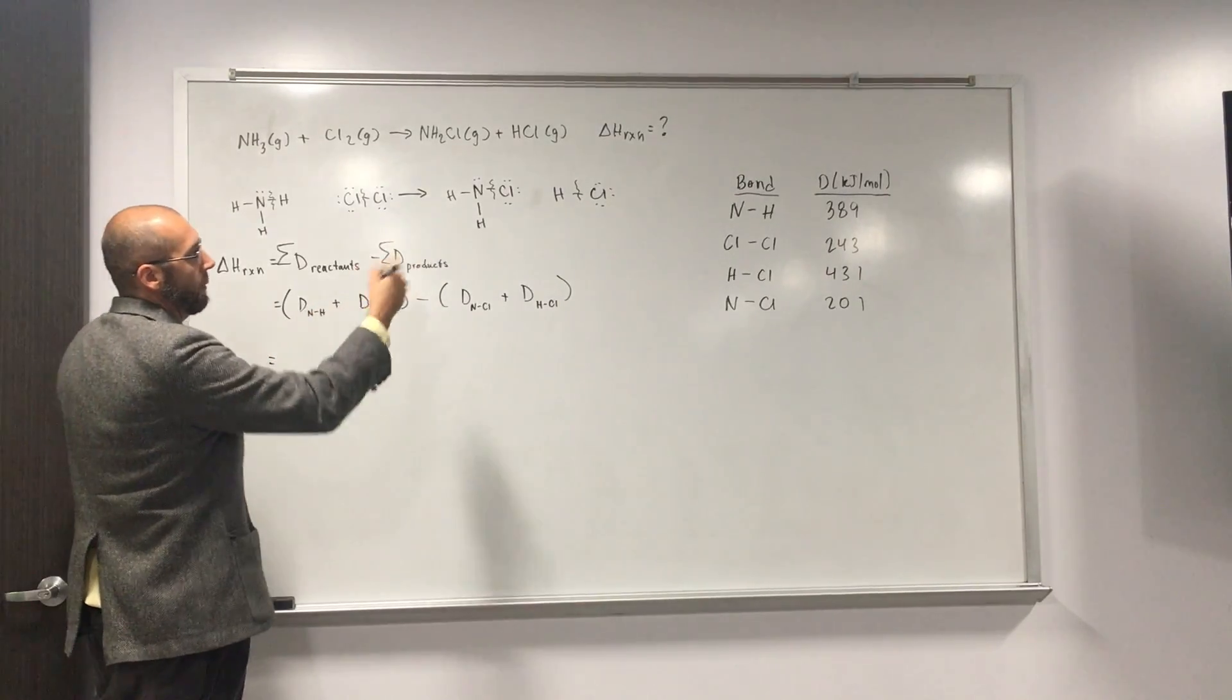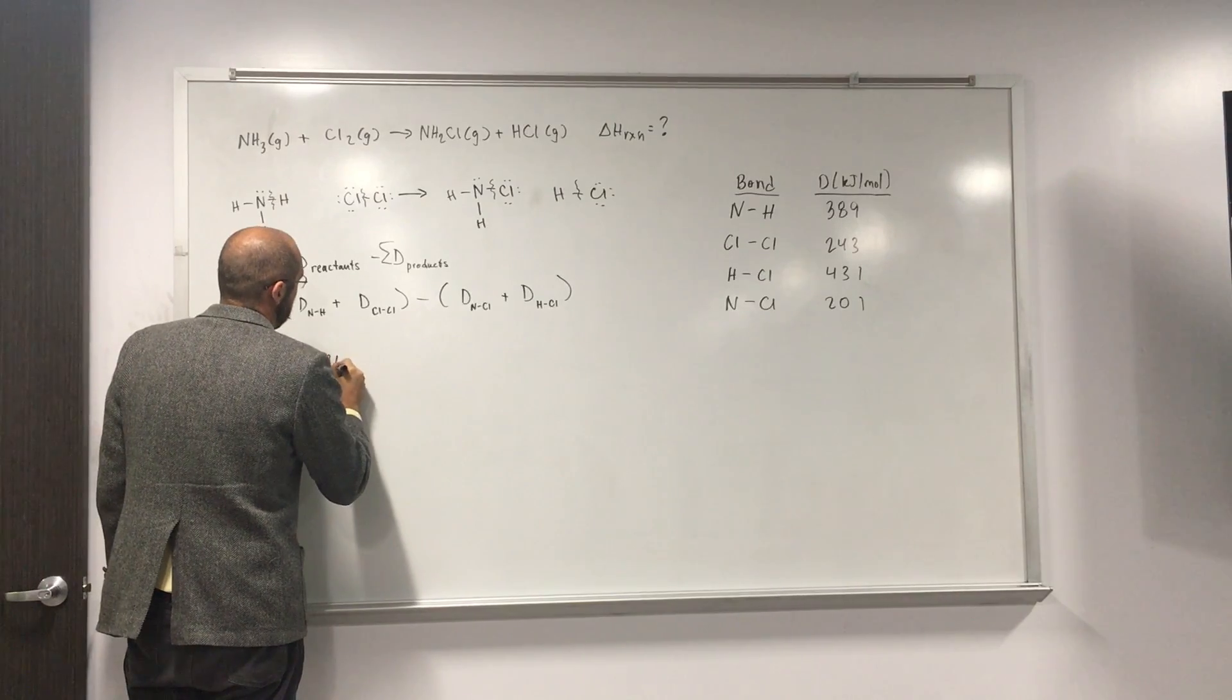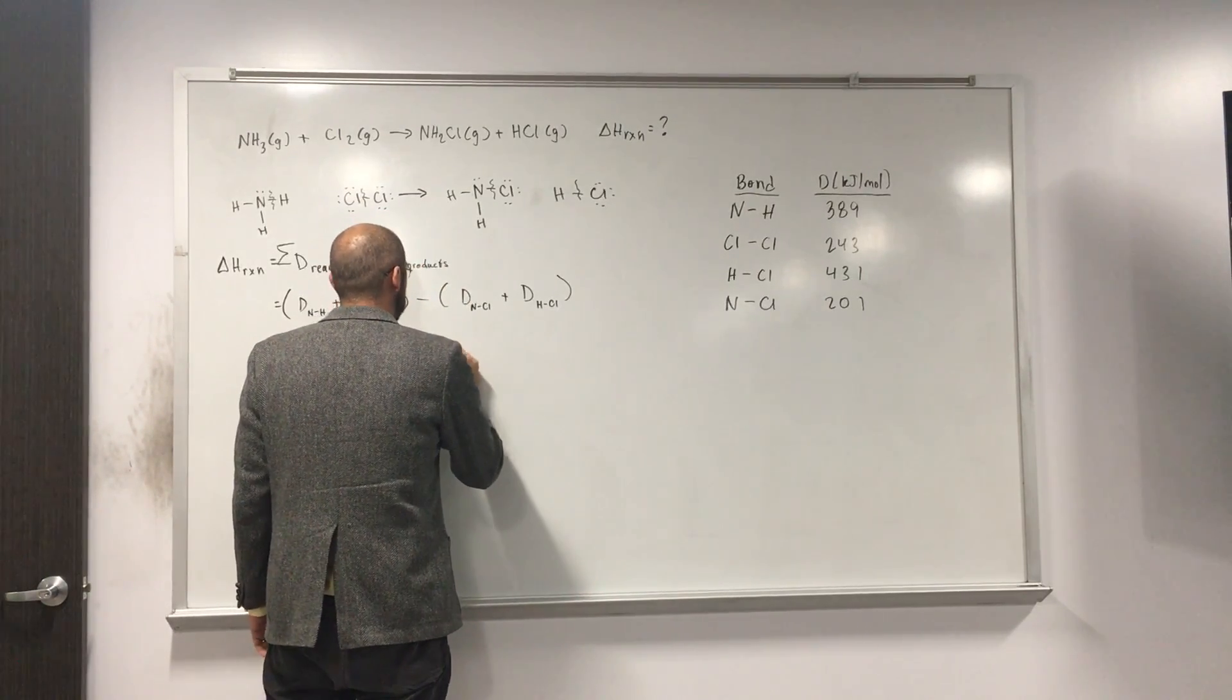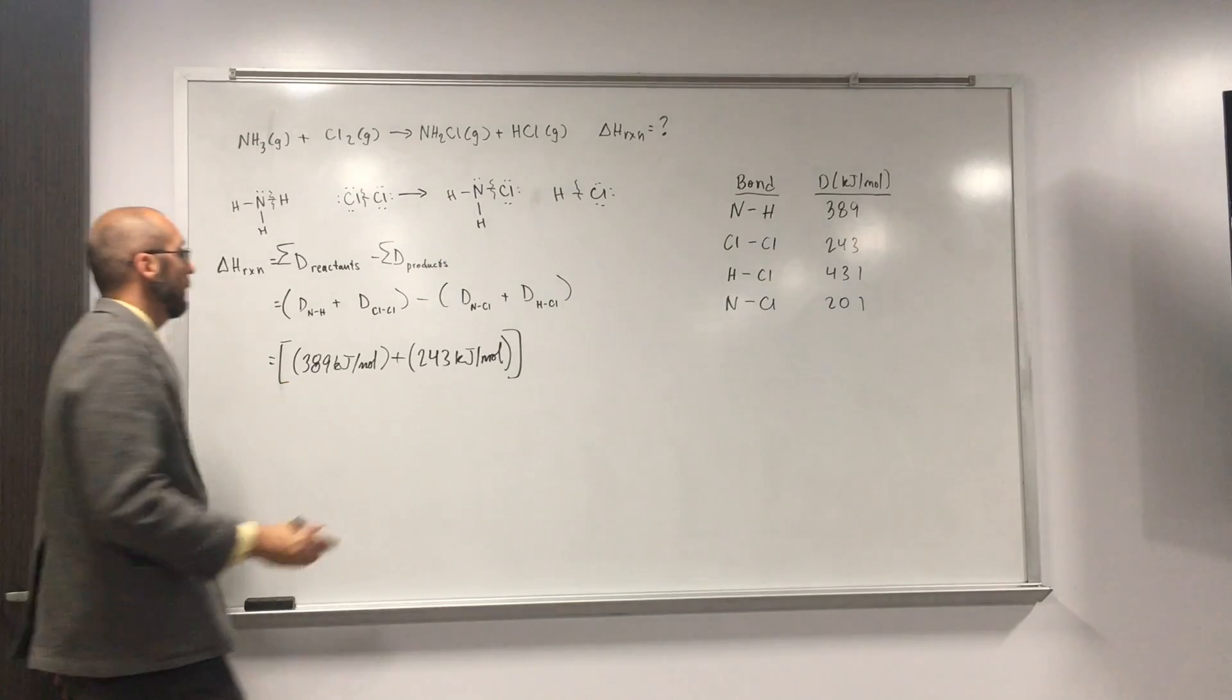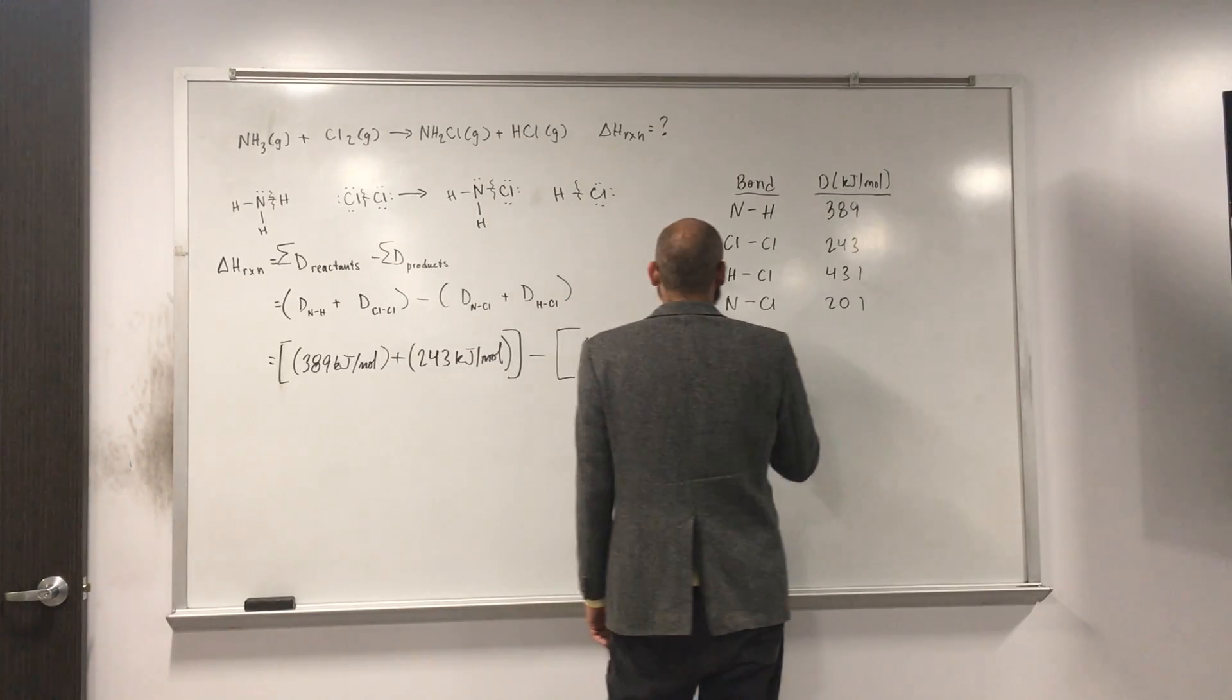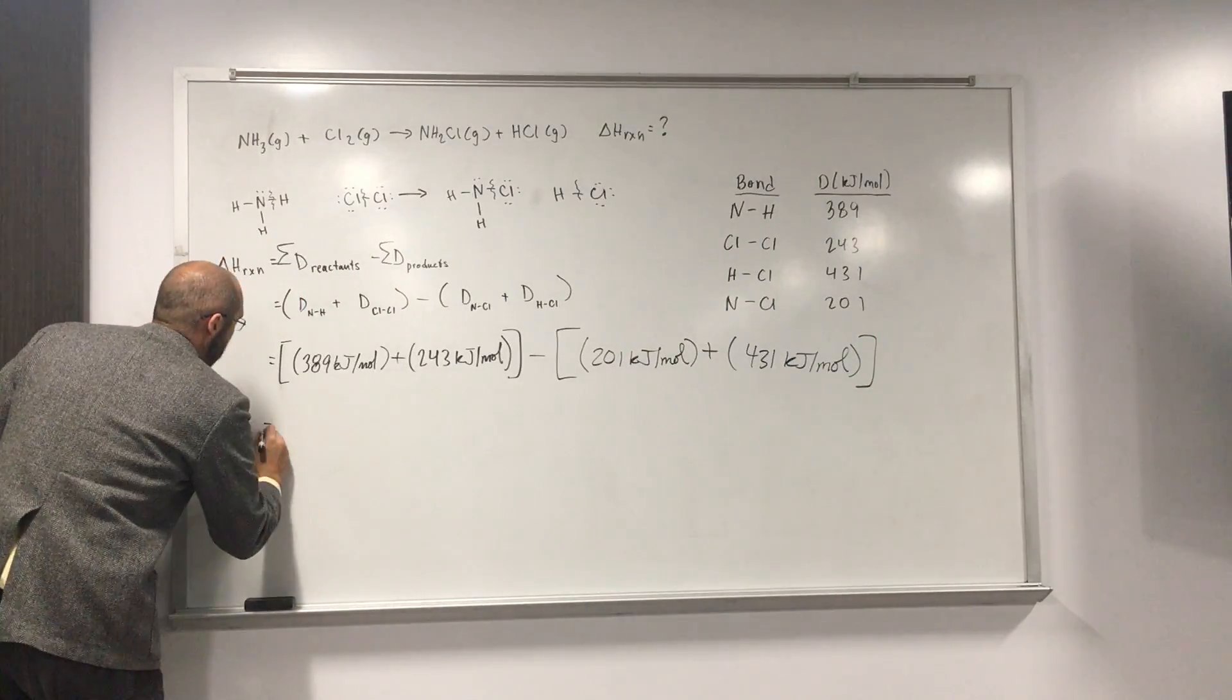And so now we just, it's a plug and chug, right? So D of NH. So we'll do it this way. 389 kilojoules per mole. Cl-Cl, what is that one? 243 kilojoules per mole. Is everybody okay with what I've done? And then N-Cl 201 kilojoules per mole. And then add that to HCl 431 kilojoules per mole.